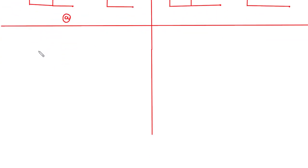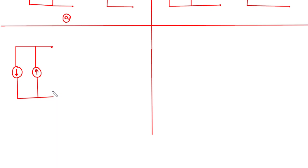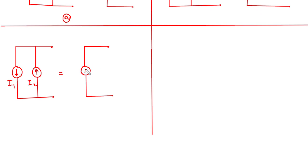Now there are two more possibilities. Let's say two more current sources are connected in parallel — this one is downward and one more current source on the upper side. Let's say this is current I1 and this is current I2. This time if I2 is greater than I1, then the direction of the equivalent current source will be upward and its value will be I2 minus I1.